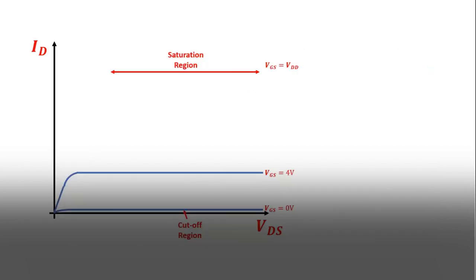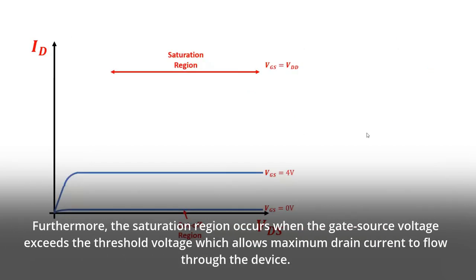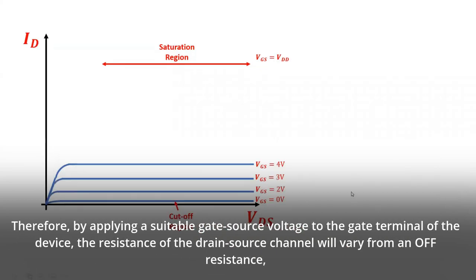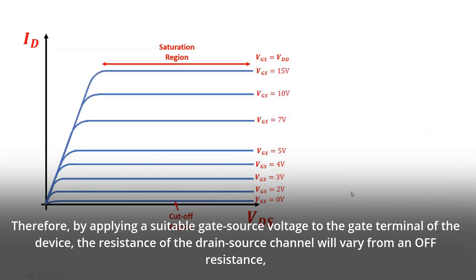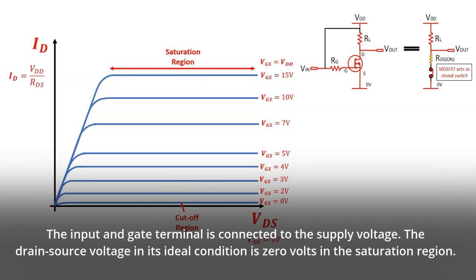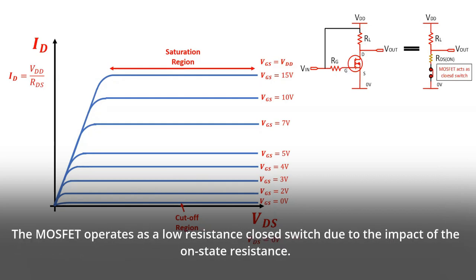Furthermore, the saturation region occurs when the gate source voltage exceeds the threshold voltage, which allows maximum drain current to flow through the device. Therefore, by applying a suitable gate source voltage to the gate terminal of the device, the resistance of the drain source channel will vary from an off resistance, which is effectively an open circuit, to an on resistance, which makes the device act as a short circuit. The input and gate terminal is connected to the supply voltage. The drain source voltage in its ideal condition is zero volts in the saturation region. The MOSFET operates as a low-resistance closed switch due to the impact of the on-state resistance.